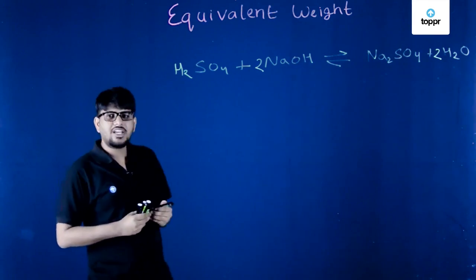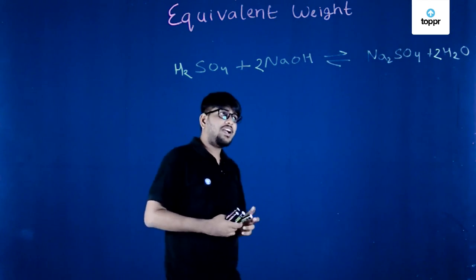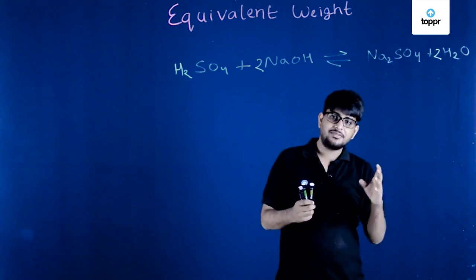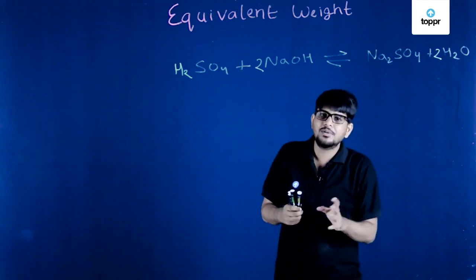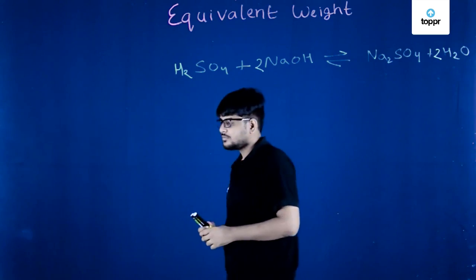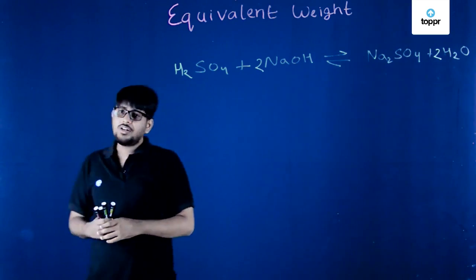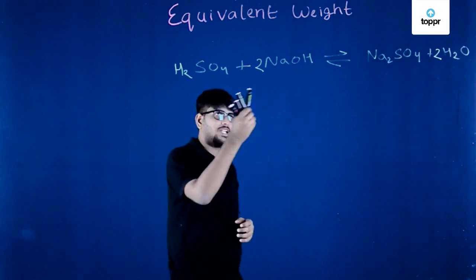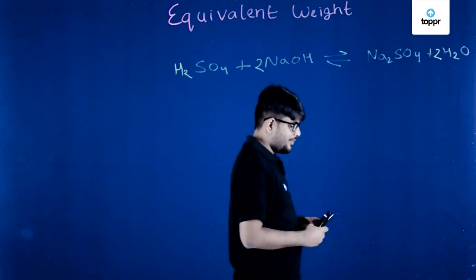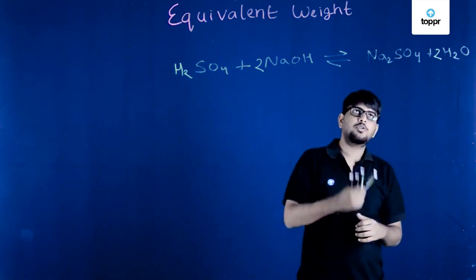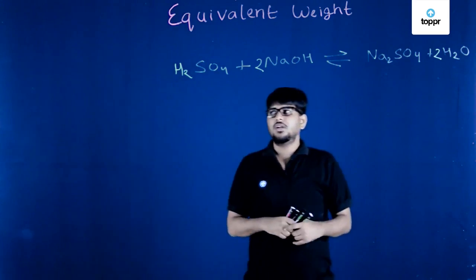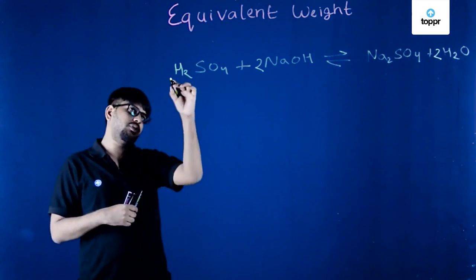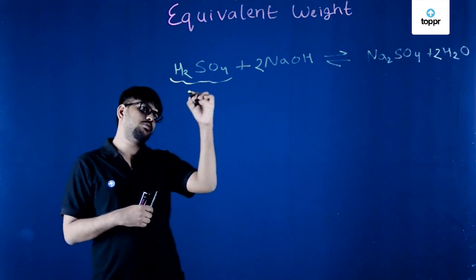That was easy because it was a simple reaction to balance. But if I give you a very tough reaction, balancing becomes a tedious task, and you still want to know how much H2SO4 should react with NaOH to produce Na2SO4.